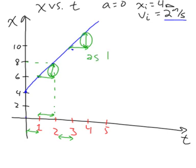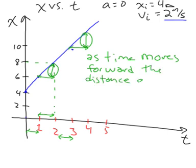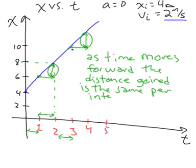So as time moves forward, the distance gained is the same per interval of time. Well, if you gain the same distance with the same amount of time, that means that the speed is same. And therefore, it's constant.